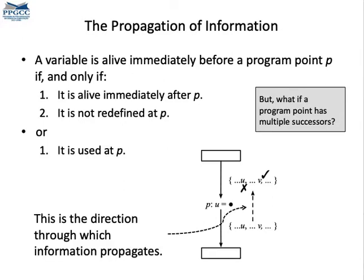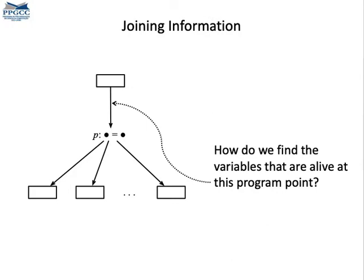In other words, we have an information system in which information propagates backwardly along the directions of the edges in the program. We call this kind of analysis a backward analysis.